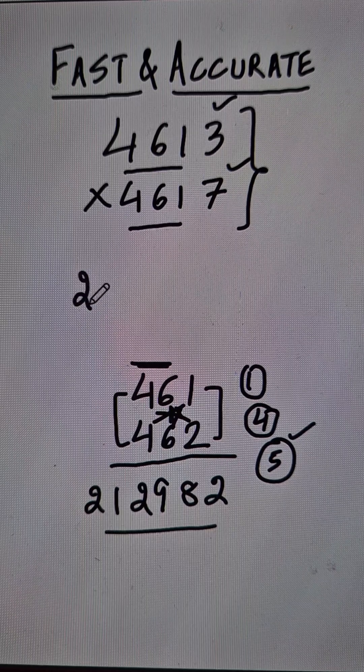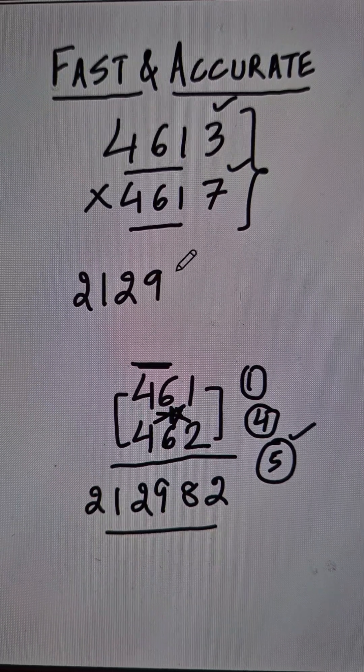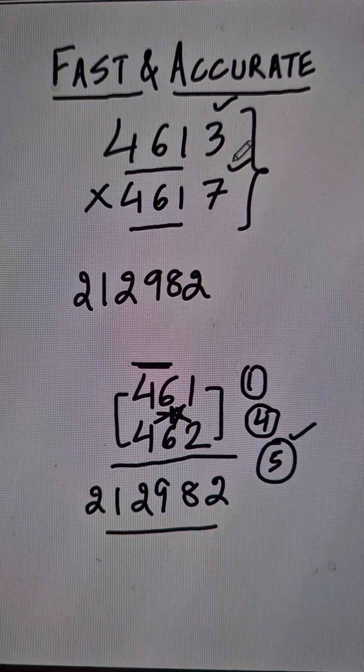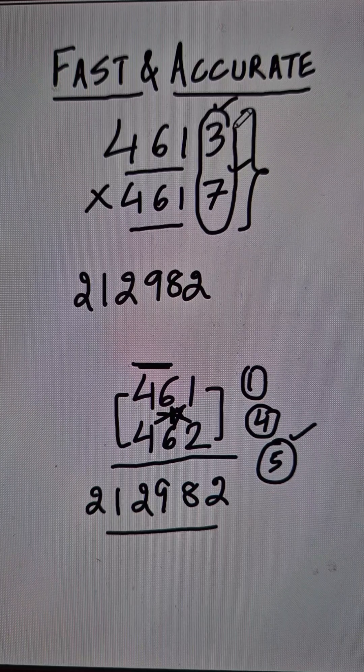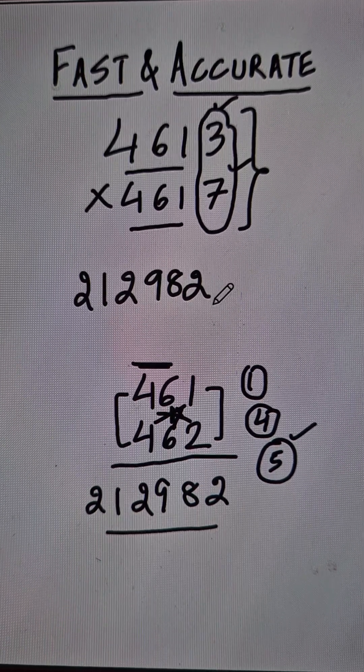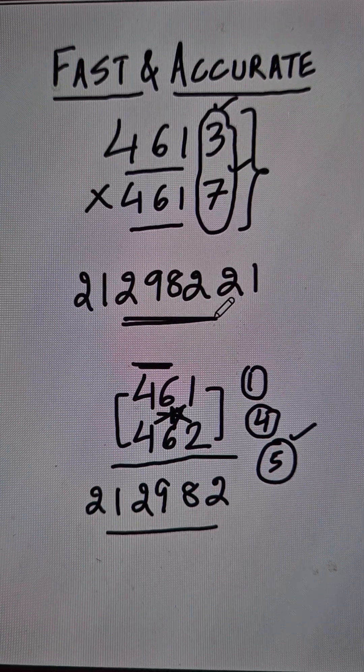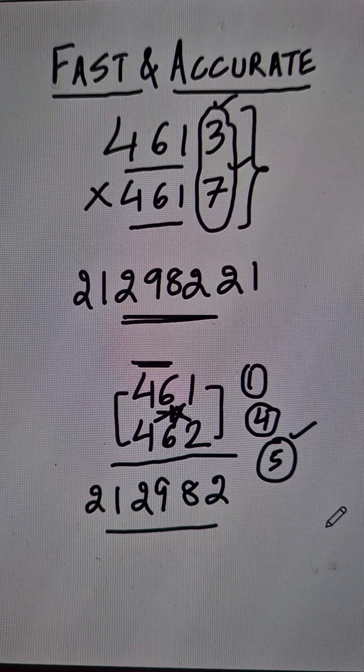That becomes the first part of my answer, 212,982. And all you need to do is take the product of the last two digits here. 3 into 7 is 21 and just suffix it here. You get the final answer for this huge product.